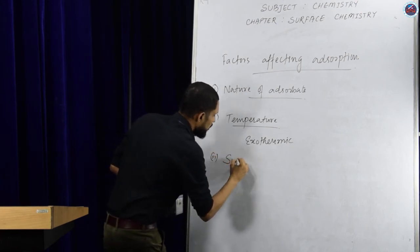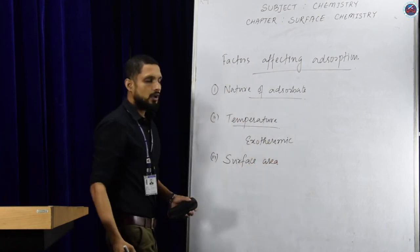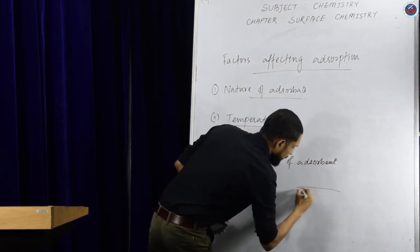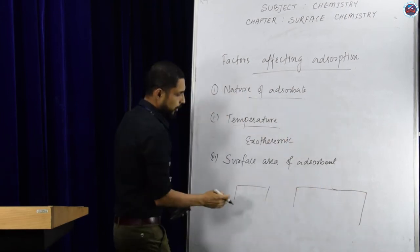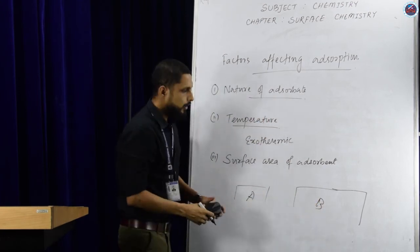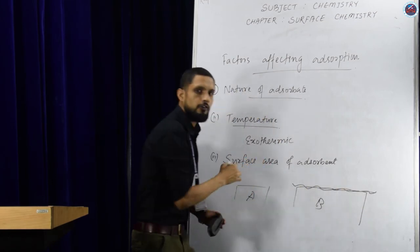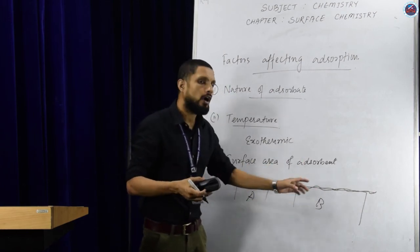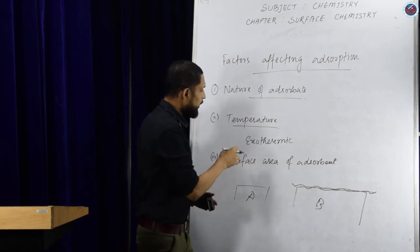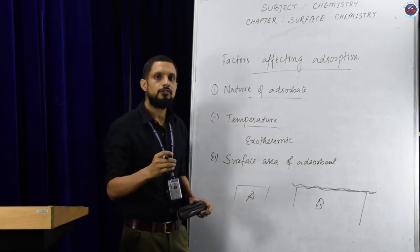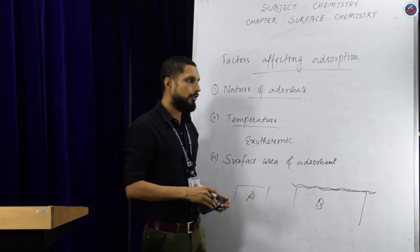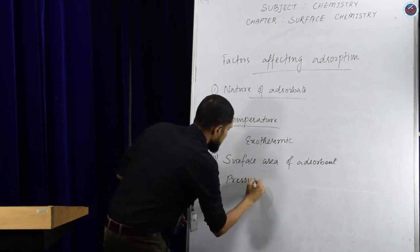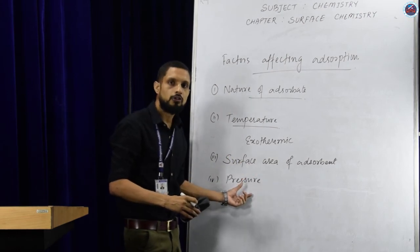The next factor is surface area of the adsorbent. If we consider two solid substances A and B, and B has a higher surface area than A, then B will have a better tendency for adsorption. So as the surface area of the adsorbent increases, the adsorption tendency also increases. The next factor is pressure: with an increase in pressure, adsorption also increases.